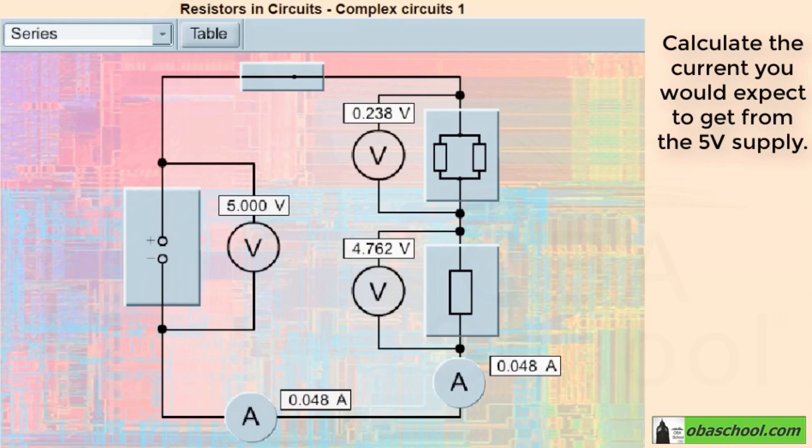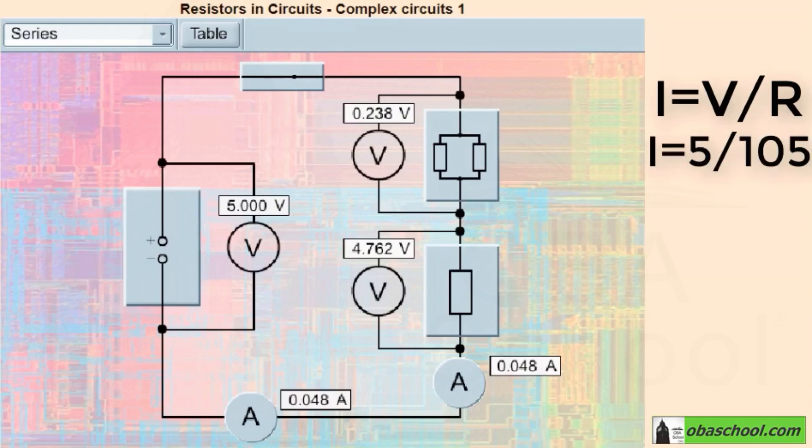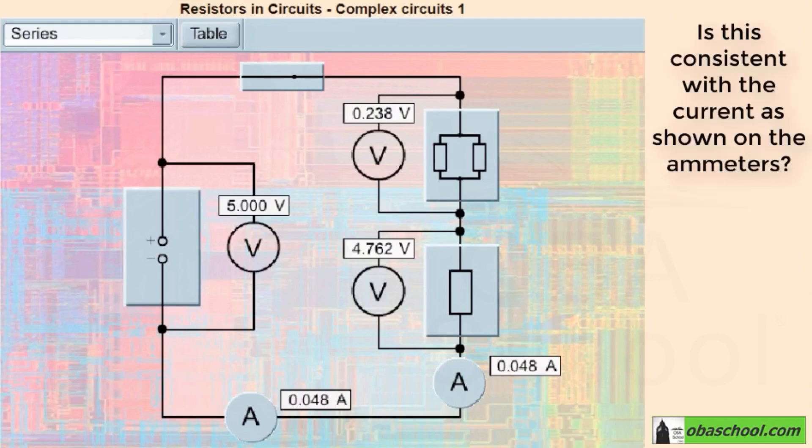Yes, using Ohm's law which states that potential difference V equals total resistance R times current, I equals V over R, potential difference divided by total resistance, which is 5 divided by 105 equals 0.048.